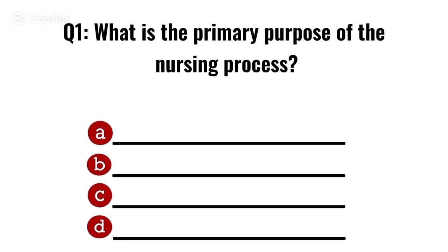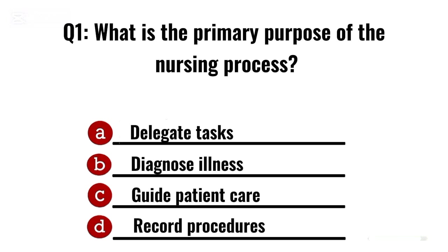Question 1. What is the primary purpose of the nursing process? Correct option C: Guide patient care.